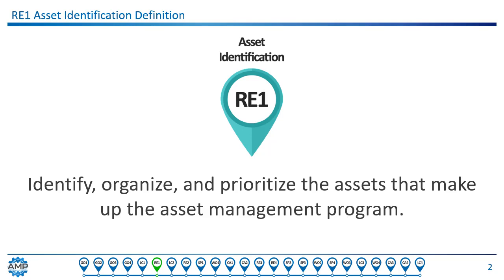Let's start with asset identification. Here you can see the function definition. Asset identification is about defining what is an asset, organizing the assets in a way that their data can be used by everybody who wants to know about them, documenting assets so that the records are complete and that we develop a common language, and prioritizing the assets so we know which ones are most important.